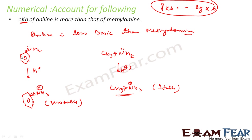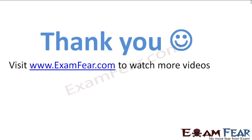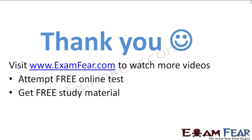If you draw the resonating structures, aniline has almost five resonating structures while methylamine has only two. In aniline's case, the reactant is more stable than the product, so the reaction with H⁺ doesn't happen as readily — and thus it is less basic. Thank you — visit our website examfear.com to watch more quality education videos, attempt free online tests, access free study materials, and find free tutors and mentors. Thanks for watching!